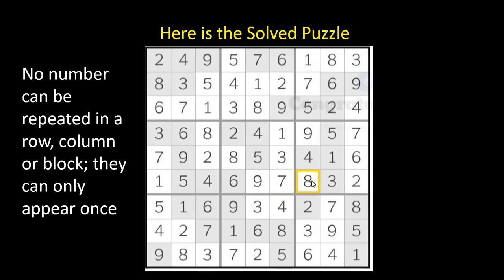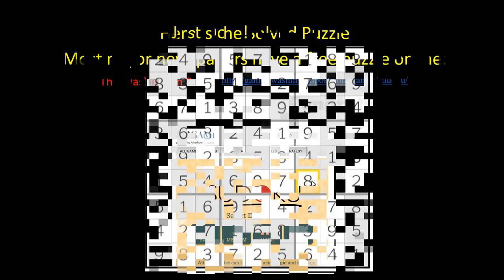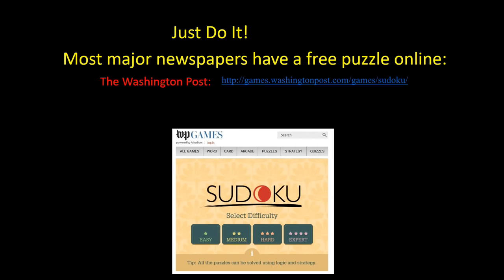By now you get the idea. Now you need to try a puzzle on your own. The best way to start playing Sudoku is to just do it. Here's a great way to start. Go to the Washington Post website. You can use the link here and a new Sudoku puzzle will be available for you every day free. Here you can see what it looks like.